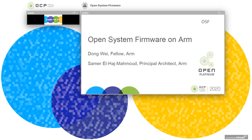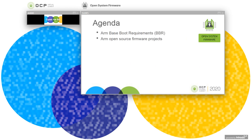Hi, this is Dong Wei. I'm a fellow at ARM. I have a colleague, Samuel El-Haj Mahmood, a senior principal architect from ARM. Today we're going to talk about open system firmware on ARM. There are two parts of our agenda: I'm going to talk about a specification called ARM-based boot requirements that we're developing, and Samuel is going to talk about the open source firmware projects that ARM and the partners are participating in.